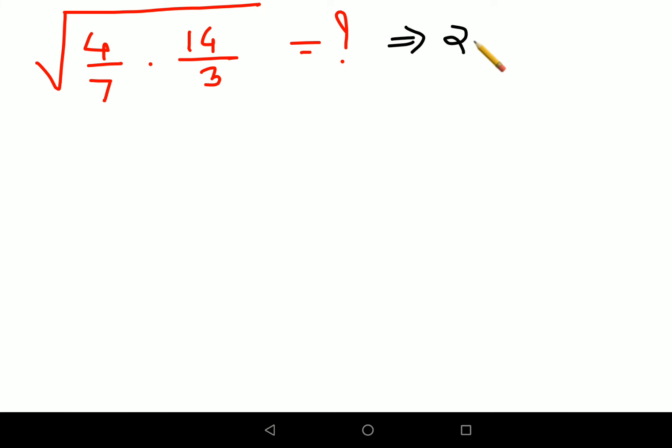If you got the answer as 2 root 6 upon 3, you're absolutely right. But if you got a very similar answer, that means somewhere down the line you got stuck or made a silly error.